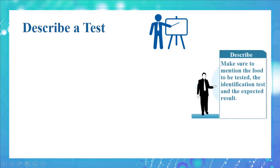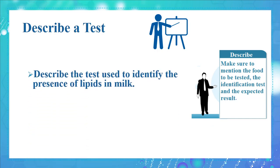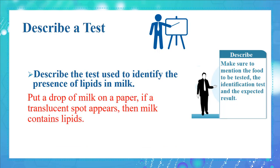While describing, make sure to mention the food to be tested, the identification test, and the expected result. Describe the test used to identify the presence of lipids in milk: put a drop of milk on paper. If a translucent spot appears, then milk contains lipids.